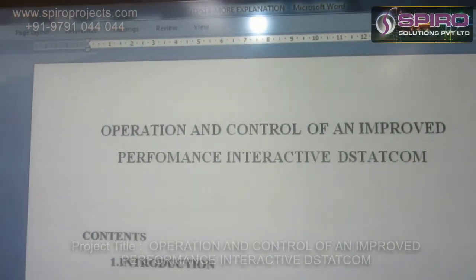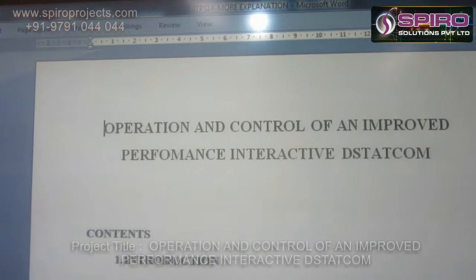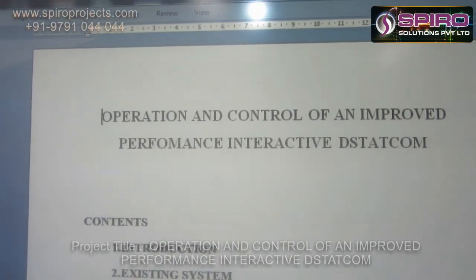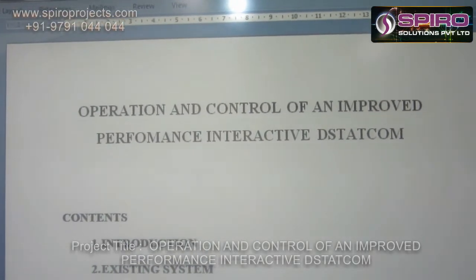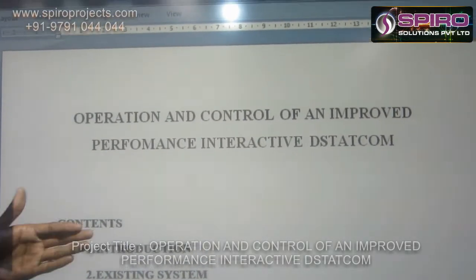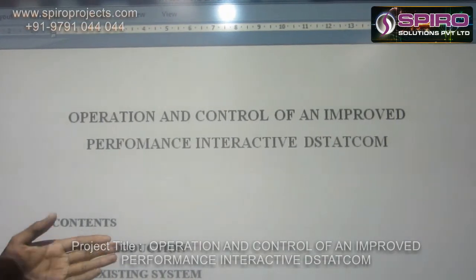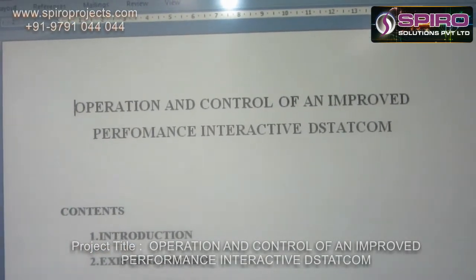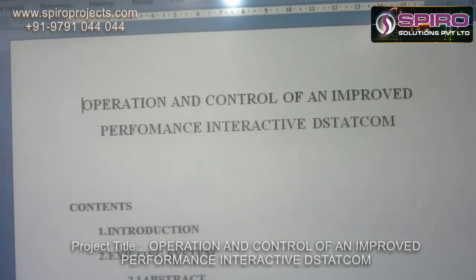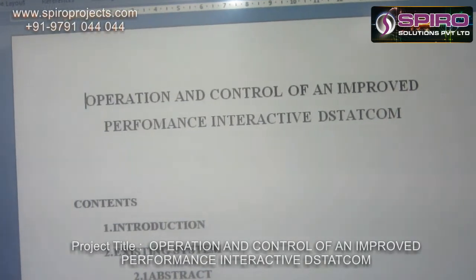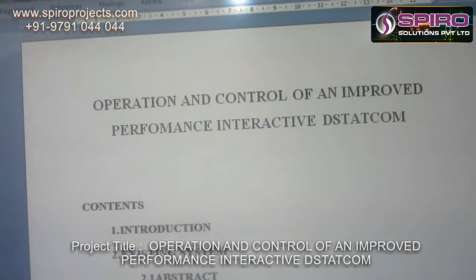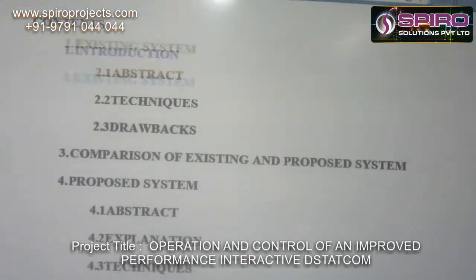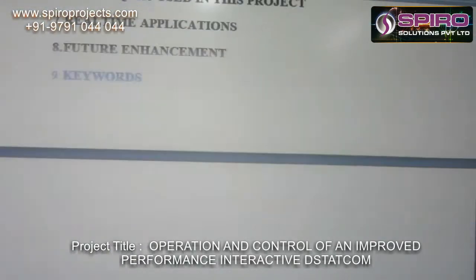What is the main objective of this system? We need to maintain the constant power and constant voltage in the transmission line. That is why we are using DSTATCOM — this is the main function of this compensator. It injects the reactive power and it absorbs the reactive power from the transmission line. We need to inject some reactive power due to our load.